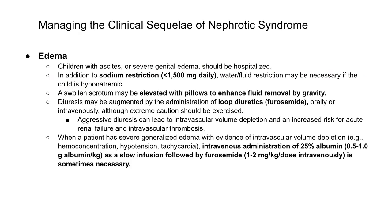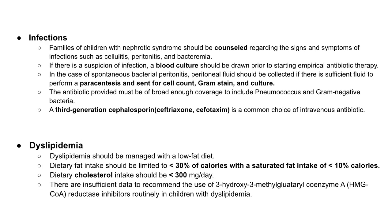Management of nephrotic syndrome patients with edema: children with ascites or severe generalized edema should be hospitalized immediately. In addition to sodium restriction, fluid restriction may be necessary if the child is hyponatremic. A swollen scrotum may be elevated with pillows to enhance fluid removal by gravity. Diuresis may be augmented by loop diuretics, oral or IV, although extreme caution should be exercised. When a patient has severe generalized edema with evidence of intravascular volume depletion, intravenous administration of 25% albumin as a slow infusion followed by furosemide may be necessary.